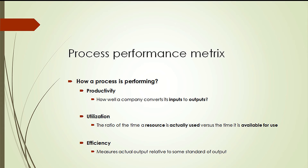Productivity is the ratio of outputs over inputs. Utilization is the ratio of time used to time available for use. Efficiency measures actual output relative to a standard of output.